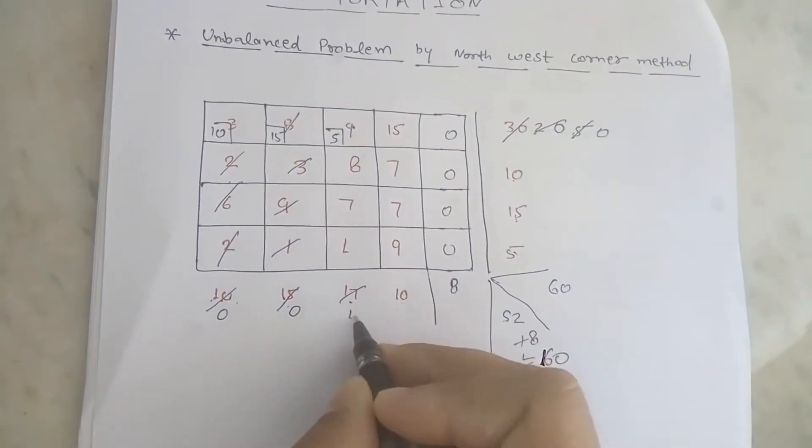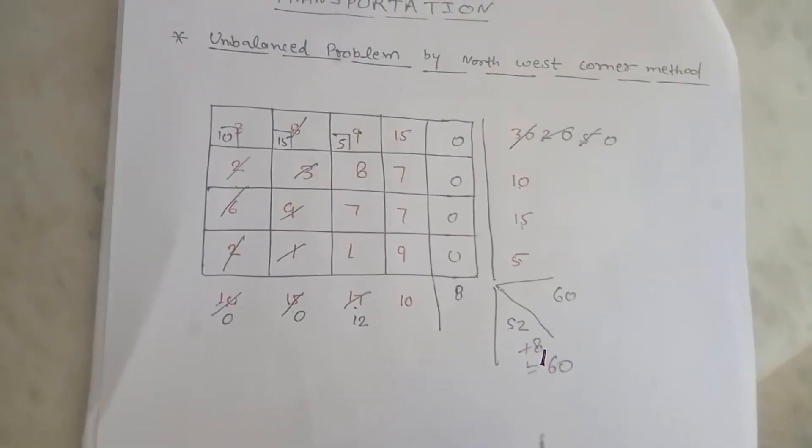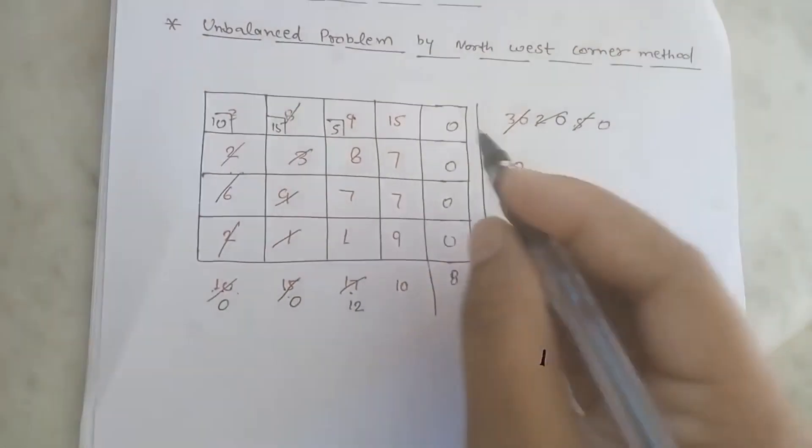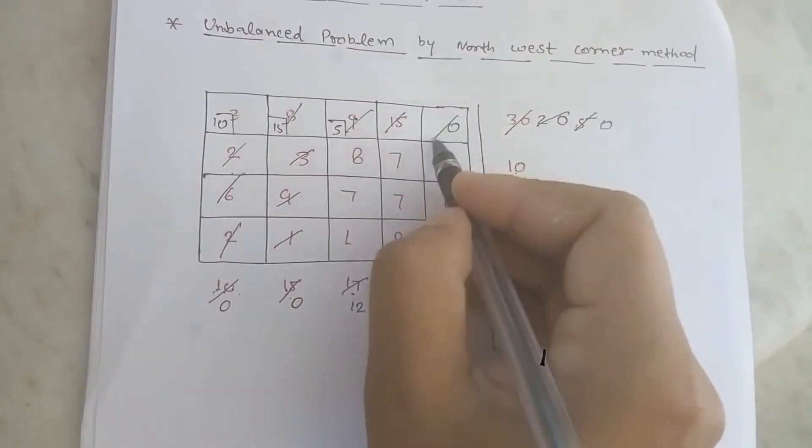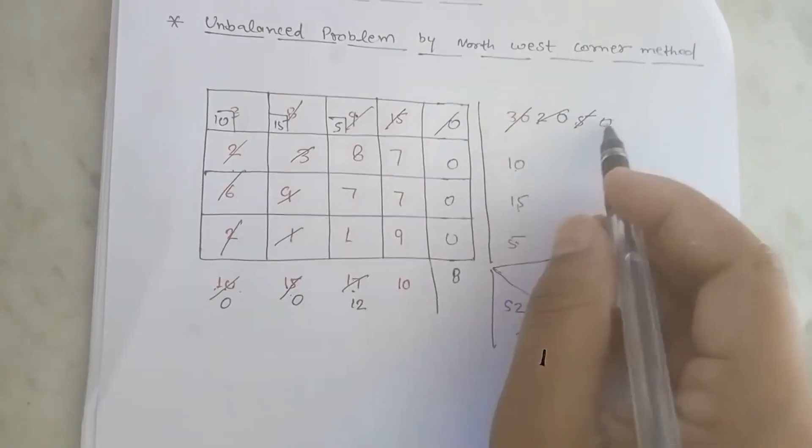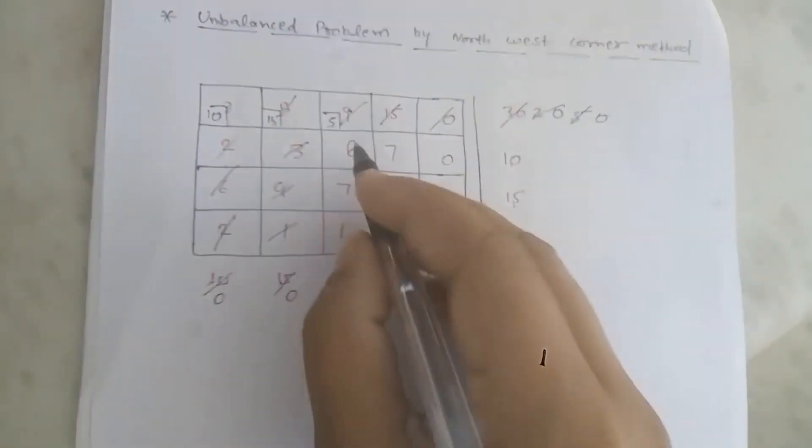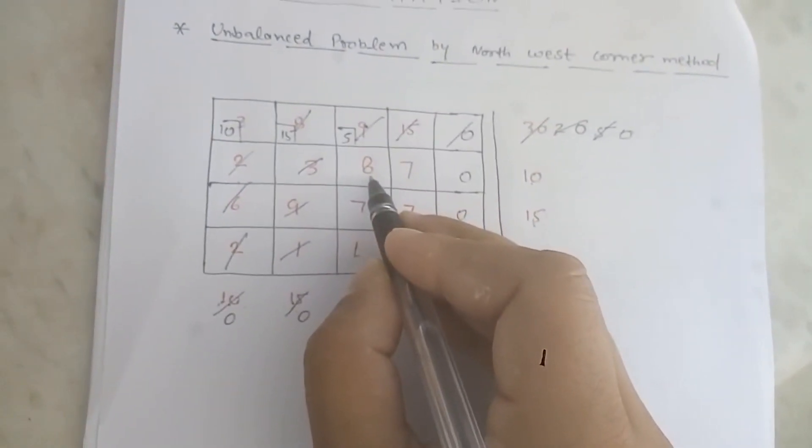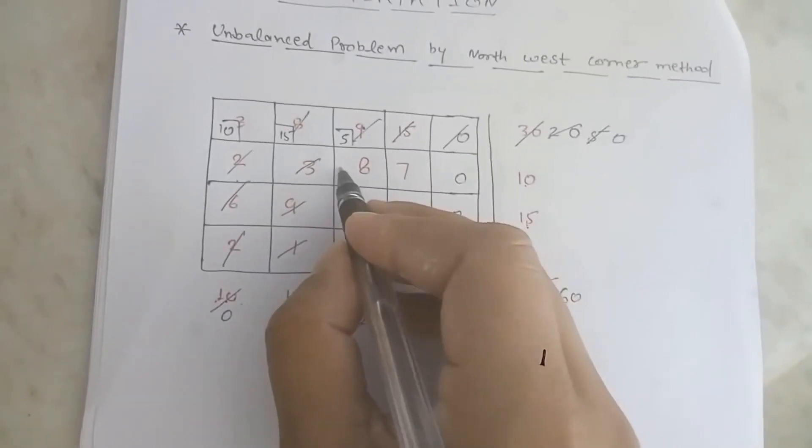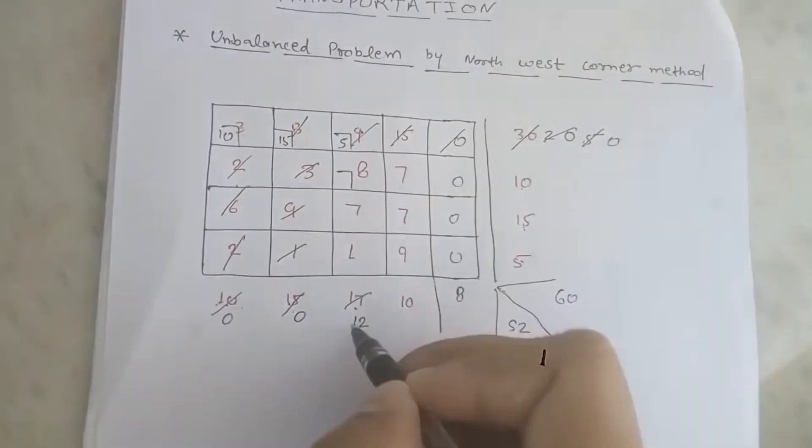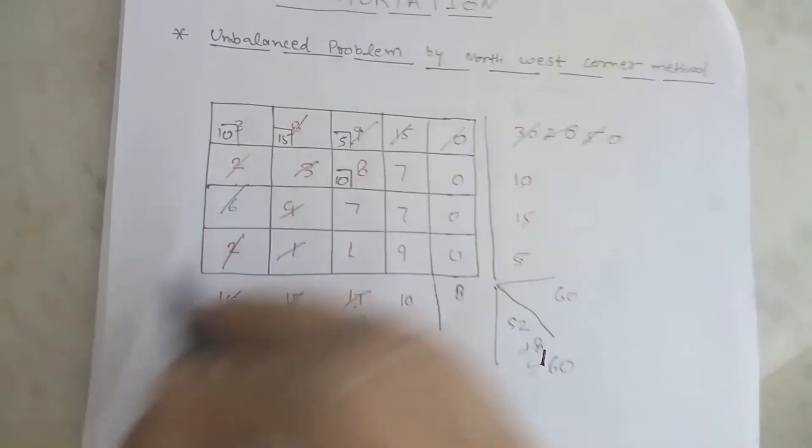Now we are going to cancel. We will introduce the numbers. So we will introduce 8 in the column. Now we will plot: 10 is the minimum number.